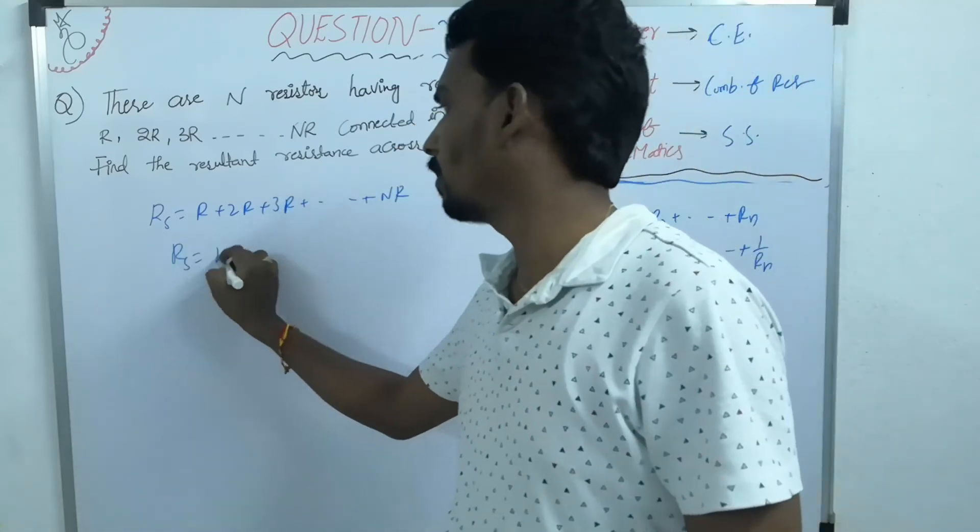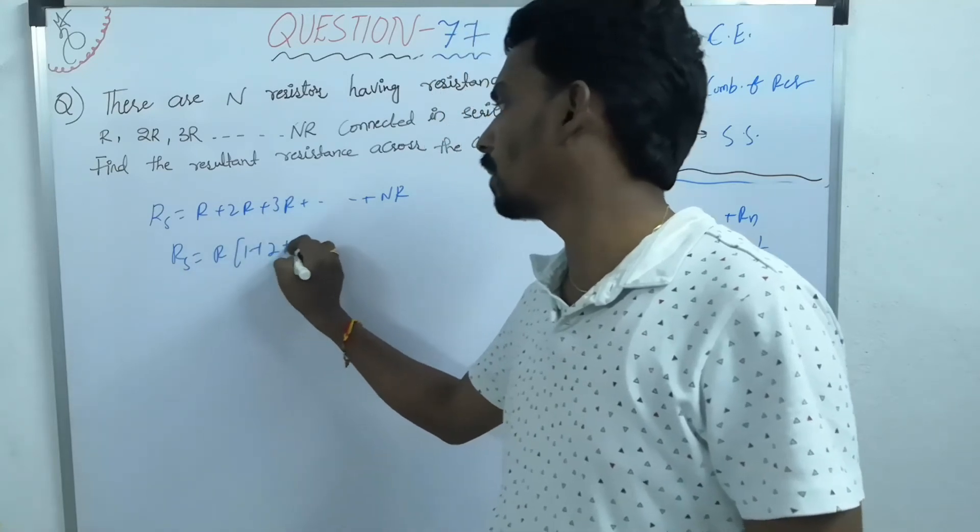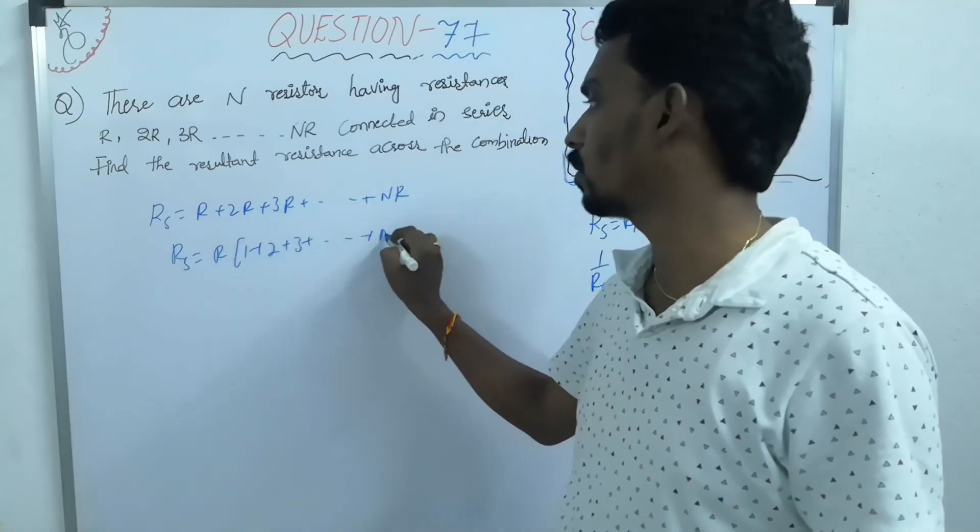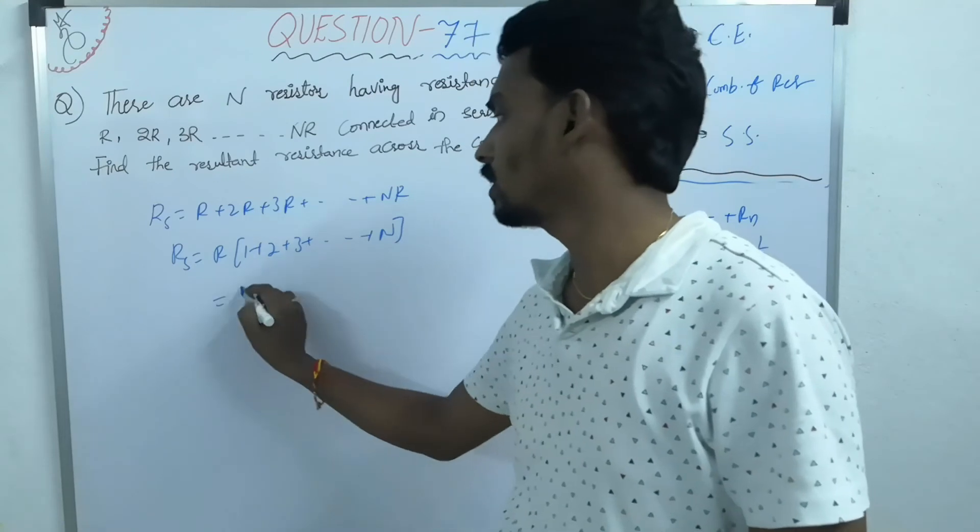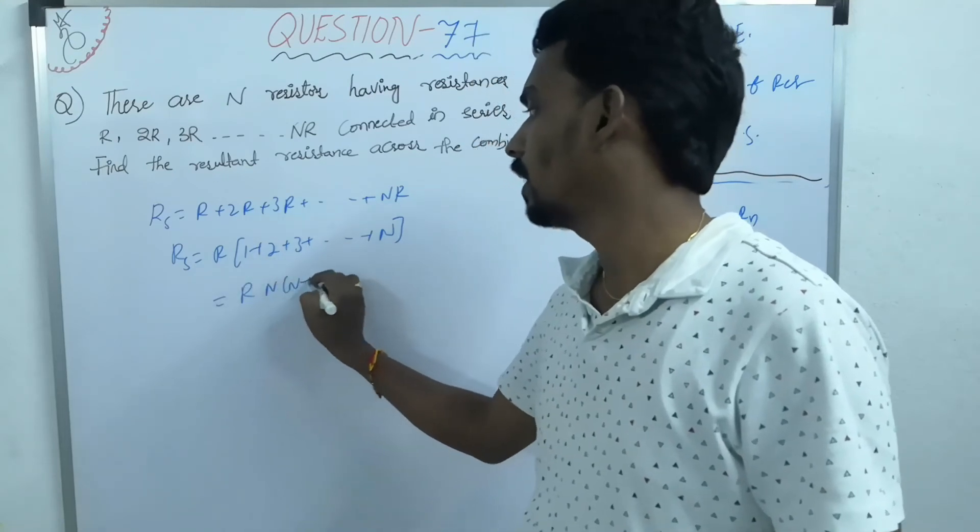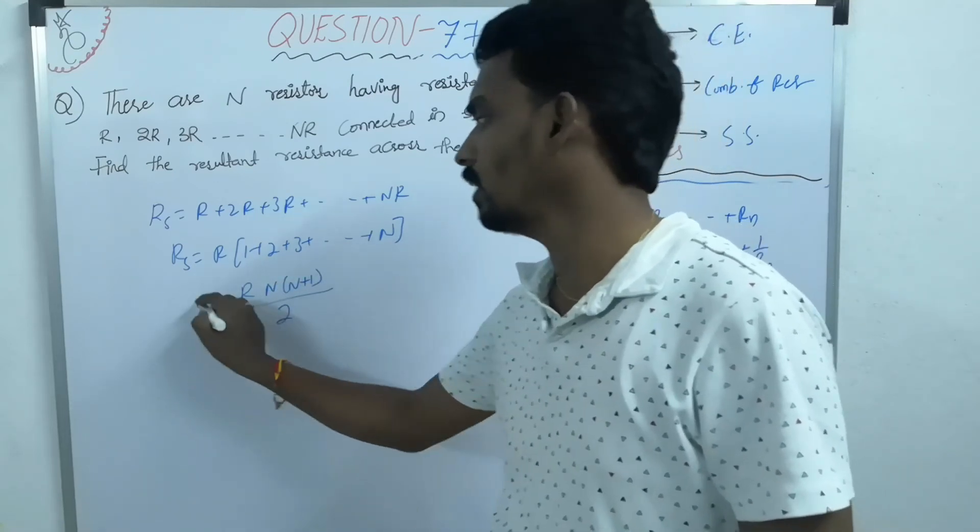So that it will become R if you take common, 1 plus 2 plus 3 plus so on, n. So what is the sum of natural numbers? n into n plus 1 by 2.